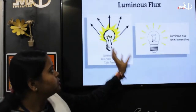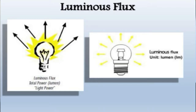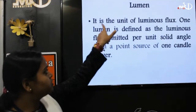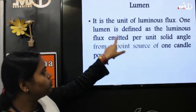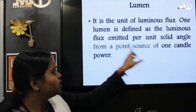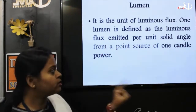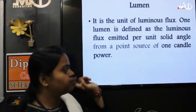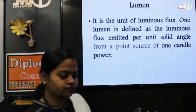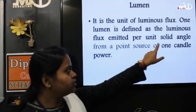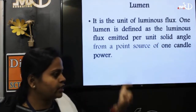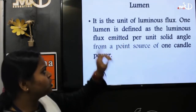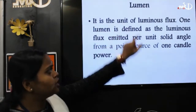Luminous flux is what is being extracted from light energy or heat energy. Lumen is the unit of luminous flux. One lumen is defined as the luminous flux emitted per unit solid angle from a point source of one candela power. Solid angle means the angle between that particular area and the distance of that light. Simply remember: lumen is the unit of luminous flux.